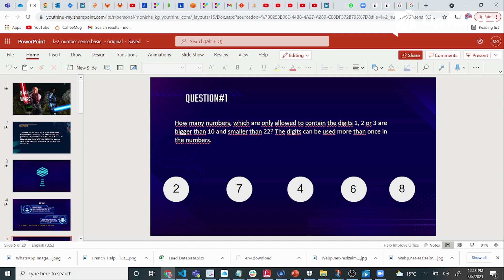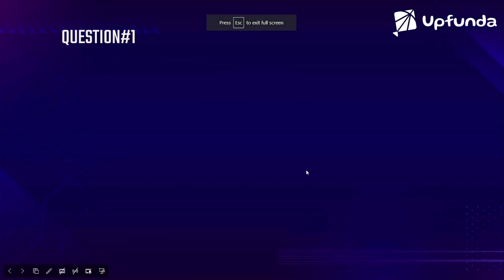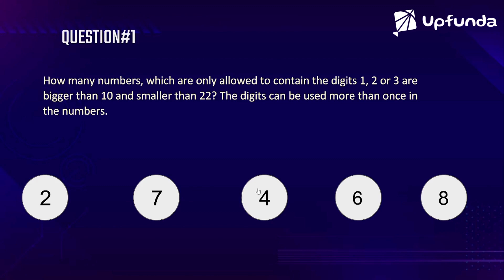Then we said the number should contain the digits 1, 2, or 3 only. And also the digits can be used more than once in the numbers. That's why 11 came into picture, because the digits were used more than once.